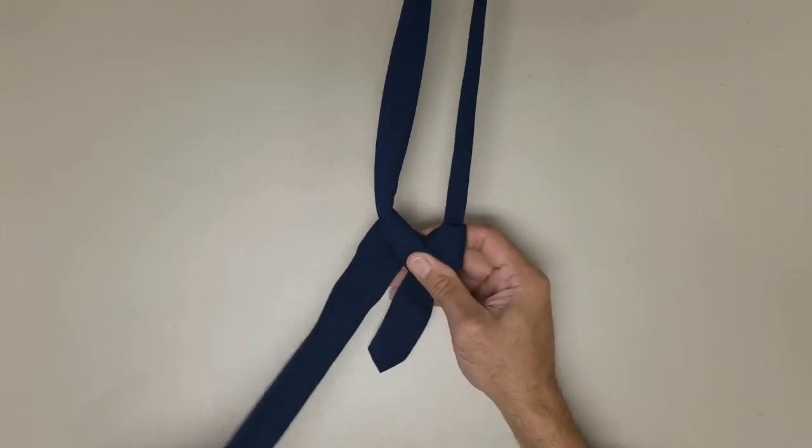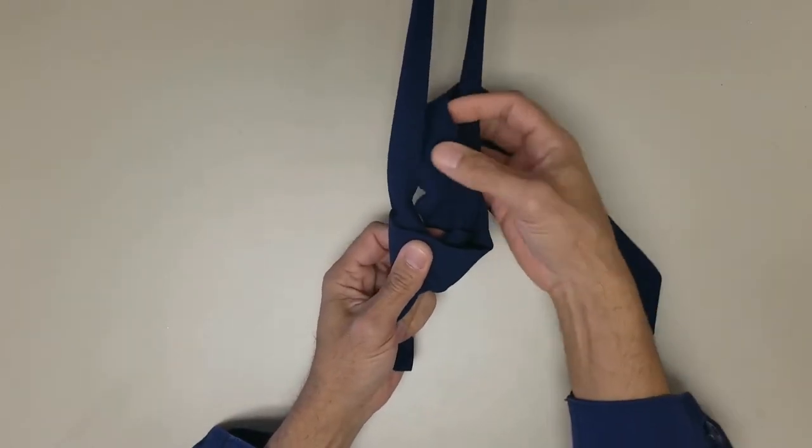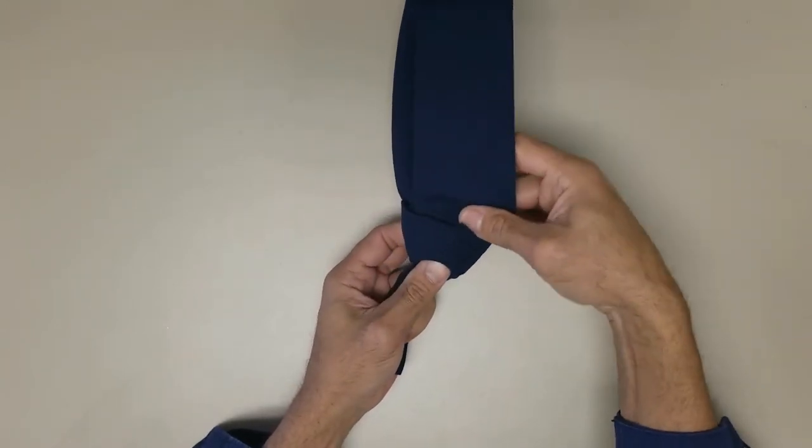Across the front to the left, up into the neck loop from underneath, pull it down through the loop you've just created in the front.